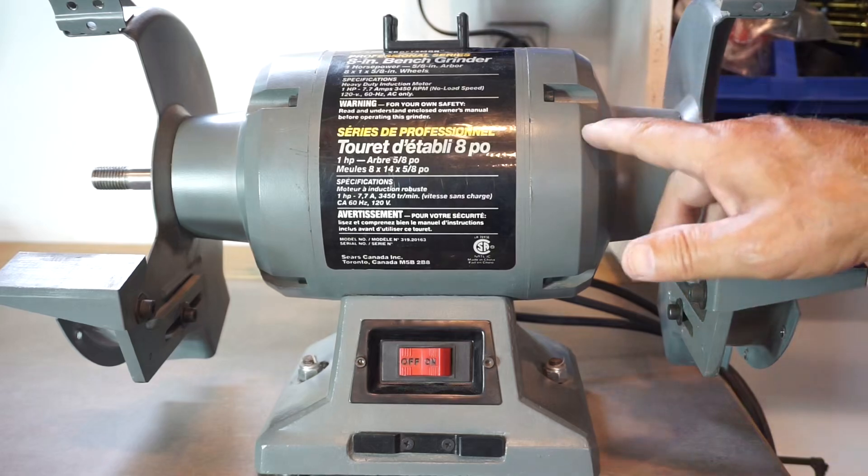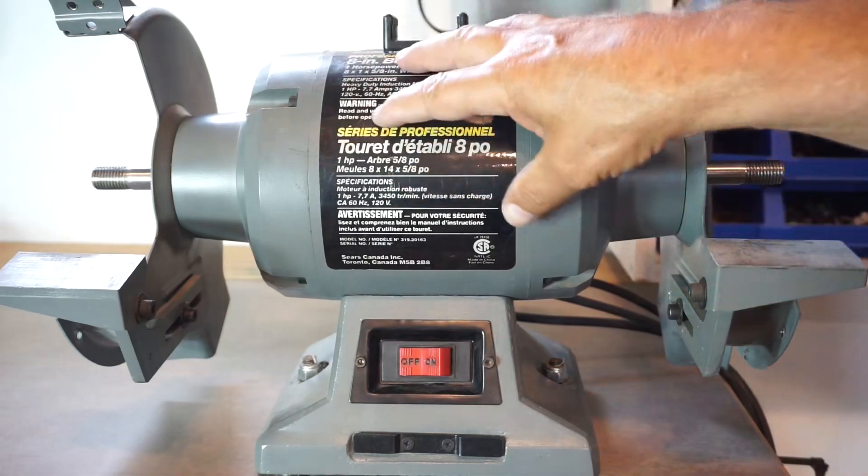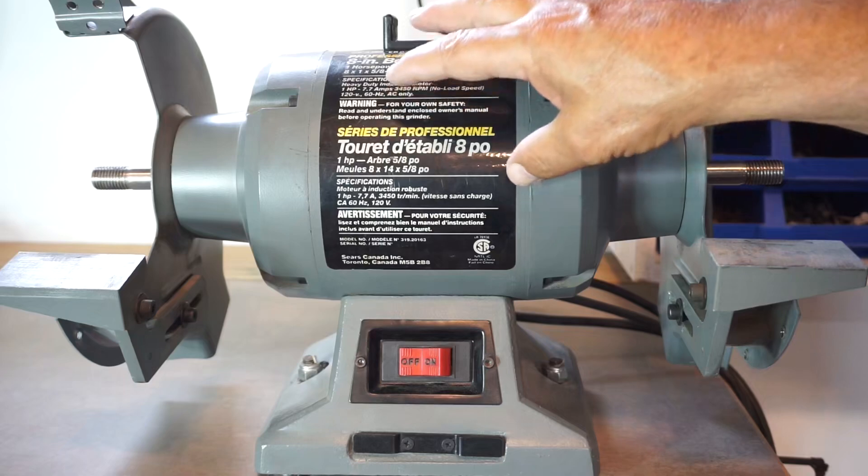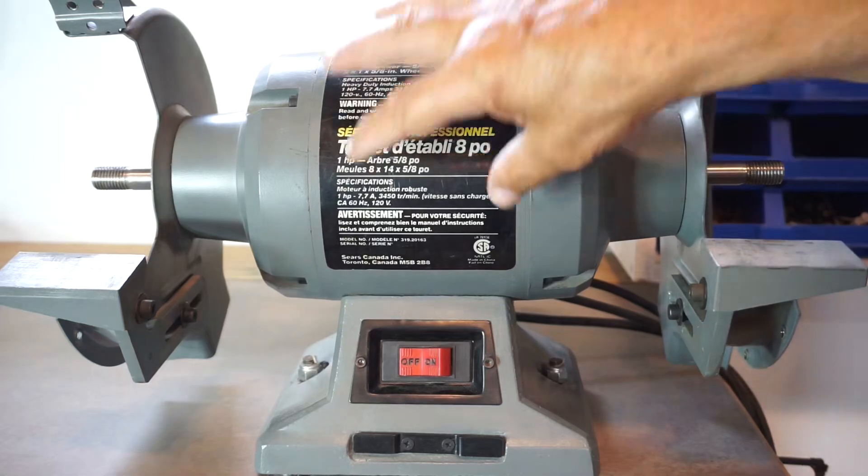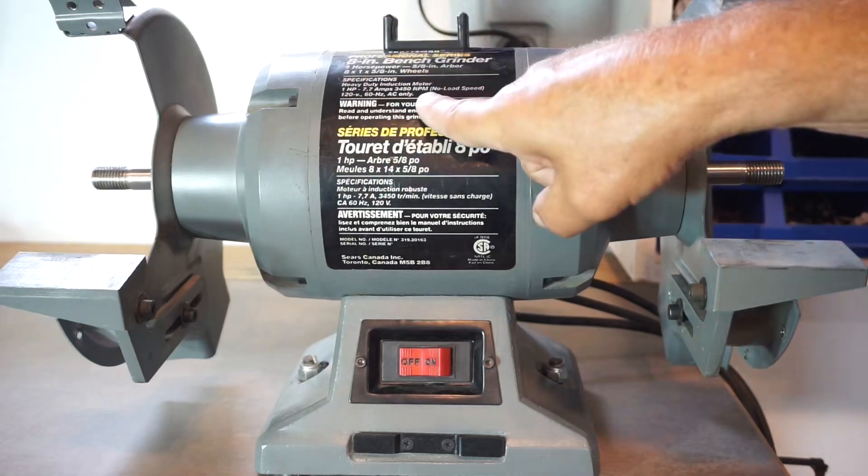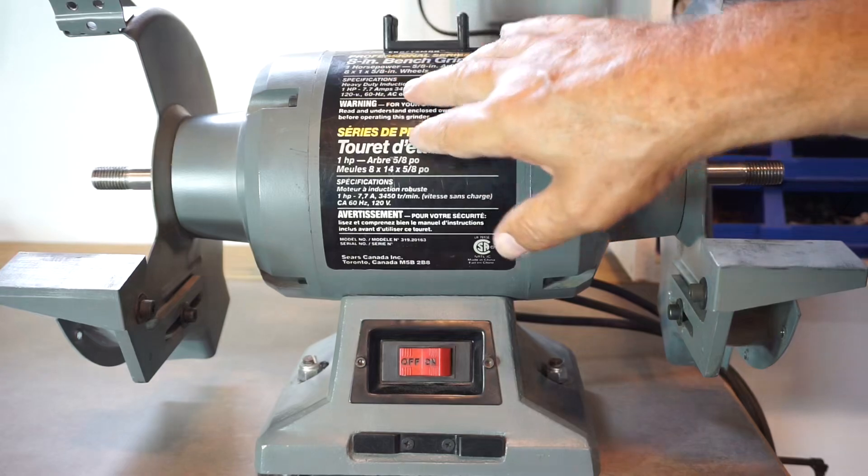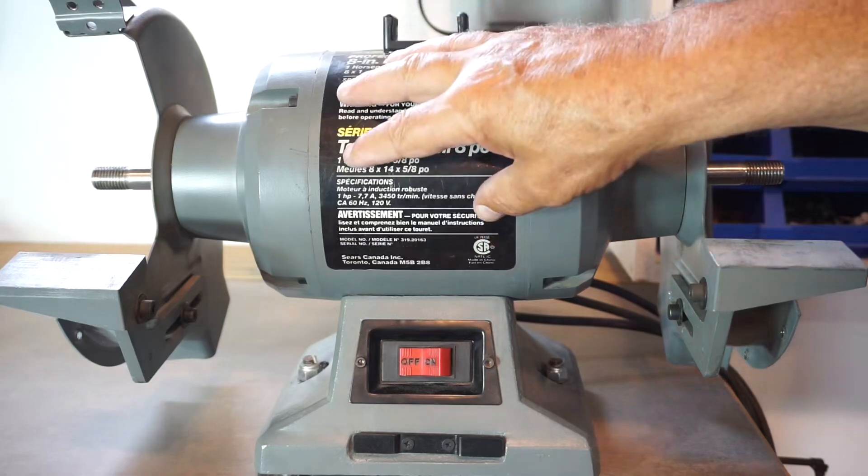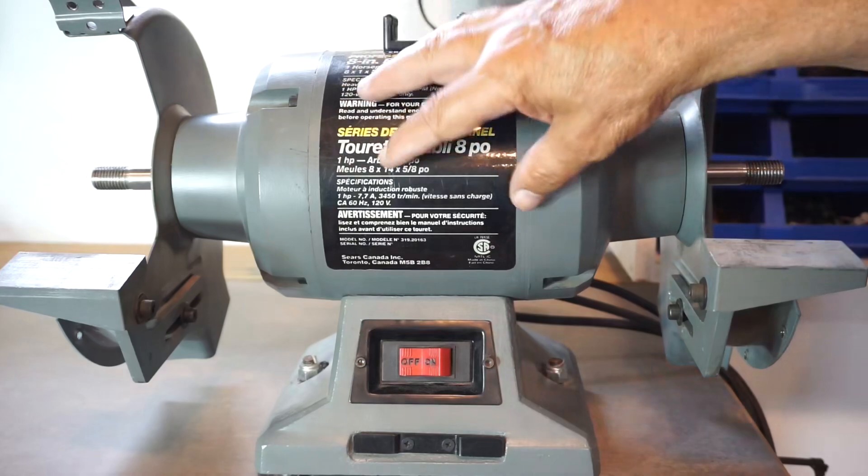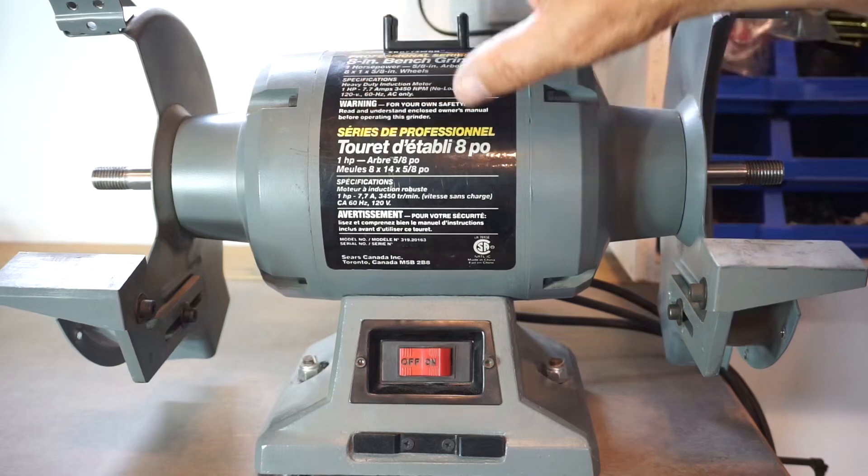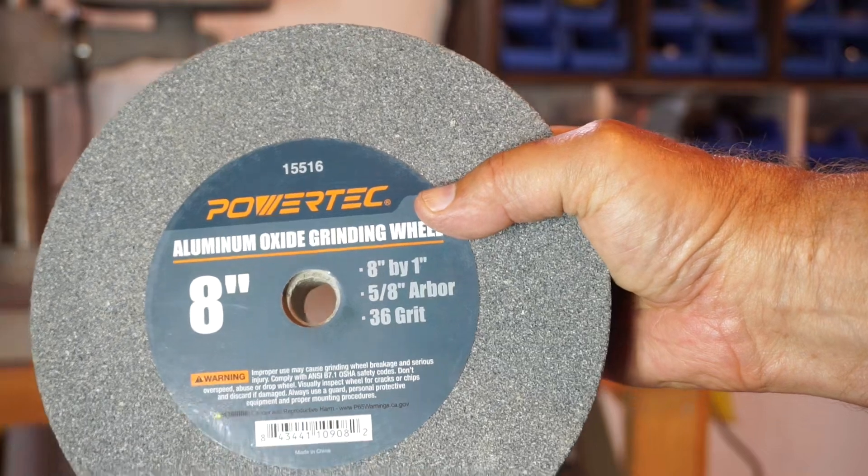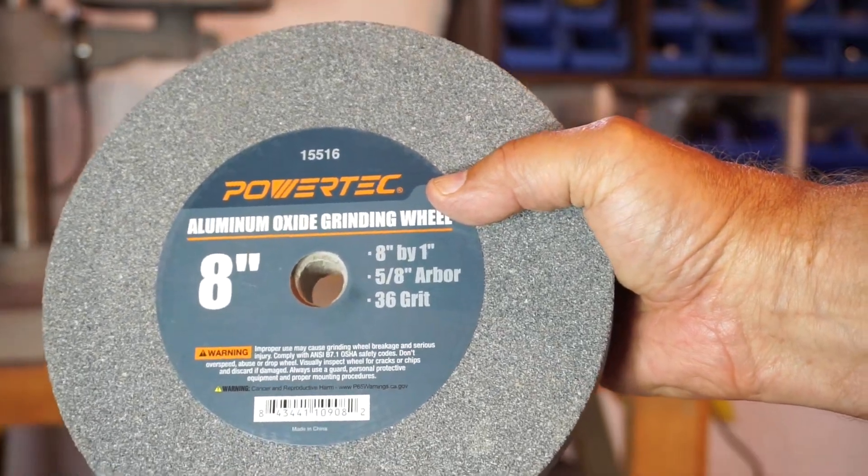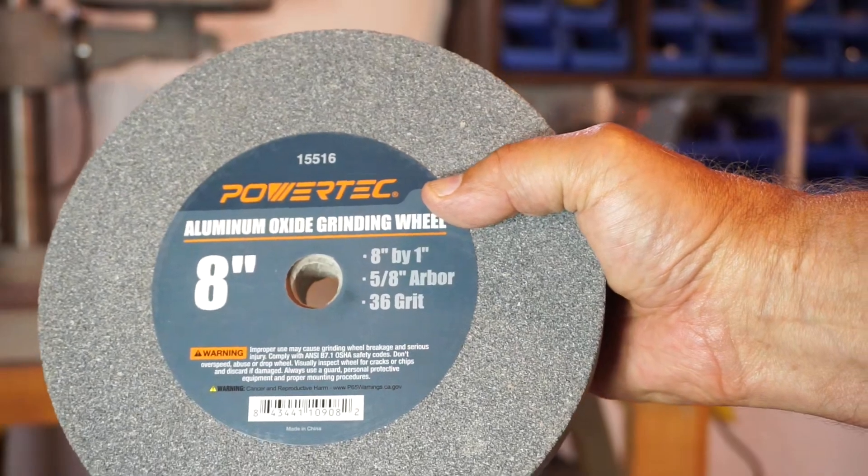I encourage you to watch part one of this bench grinder project, where I removed the rotor and dynamically balanced it with Martin Lawrence HS-XL dynamic balancing kit. As stated in part one, this grinder will be dedicated to sharpening drill bits and chisels and tools. There will never be any heavy grinding done here to maintain a very smooth running grinder. To start off on the right foot, I splurged and got two brand new grinding wheels.